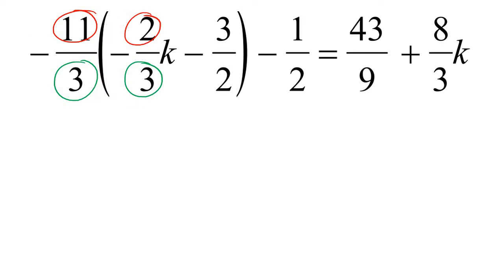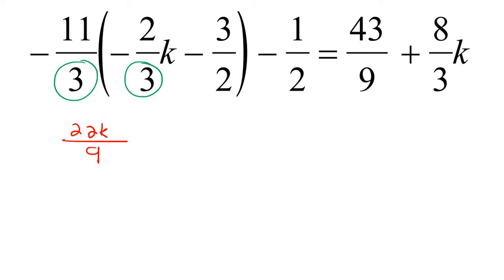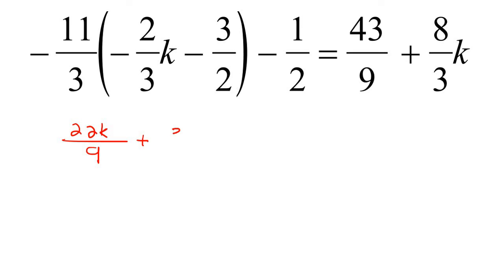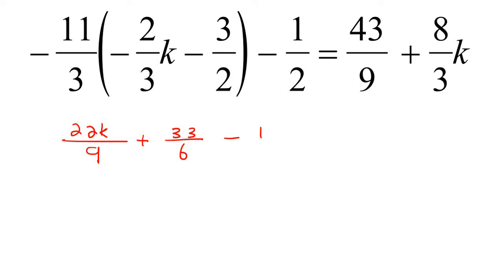Remember that these denominators do not have to be the same when you are multiplying — it is just a coincidence that those are now the same. So minus 11 times minus 2 is going to be positive 22k, and then 3 times 3 is 9. Now multiplying this and this: a negative and a negative becomes a positive, so that's 33 over 6. Remember, these two numbers do not have to be the same when multiplying. And then this minus 1 over 2 and all the others stay the same.